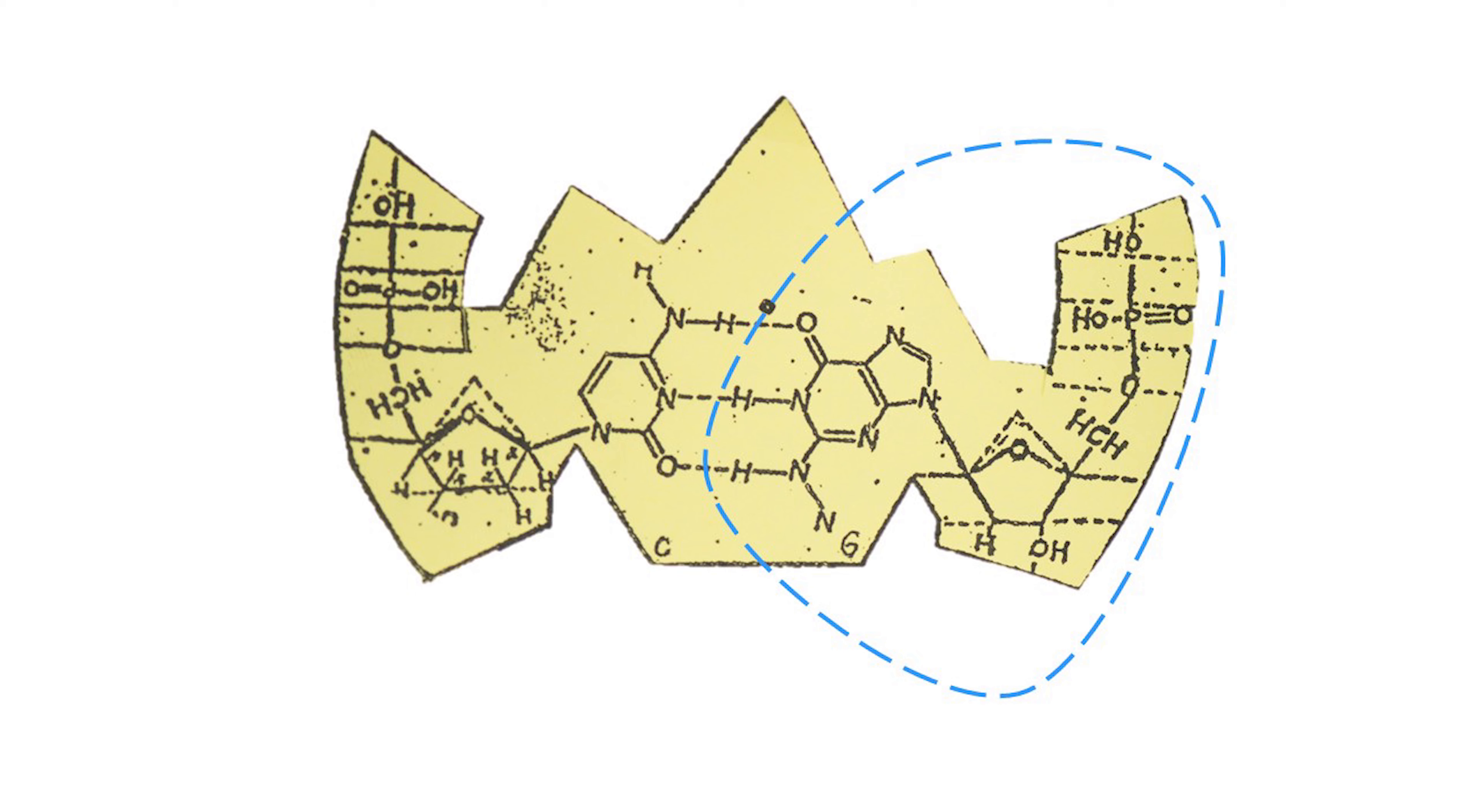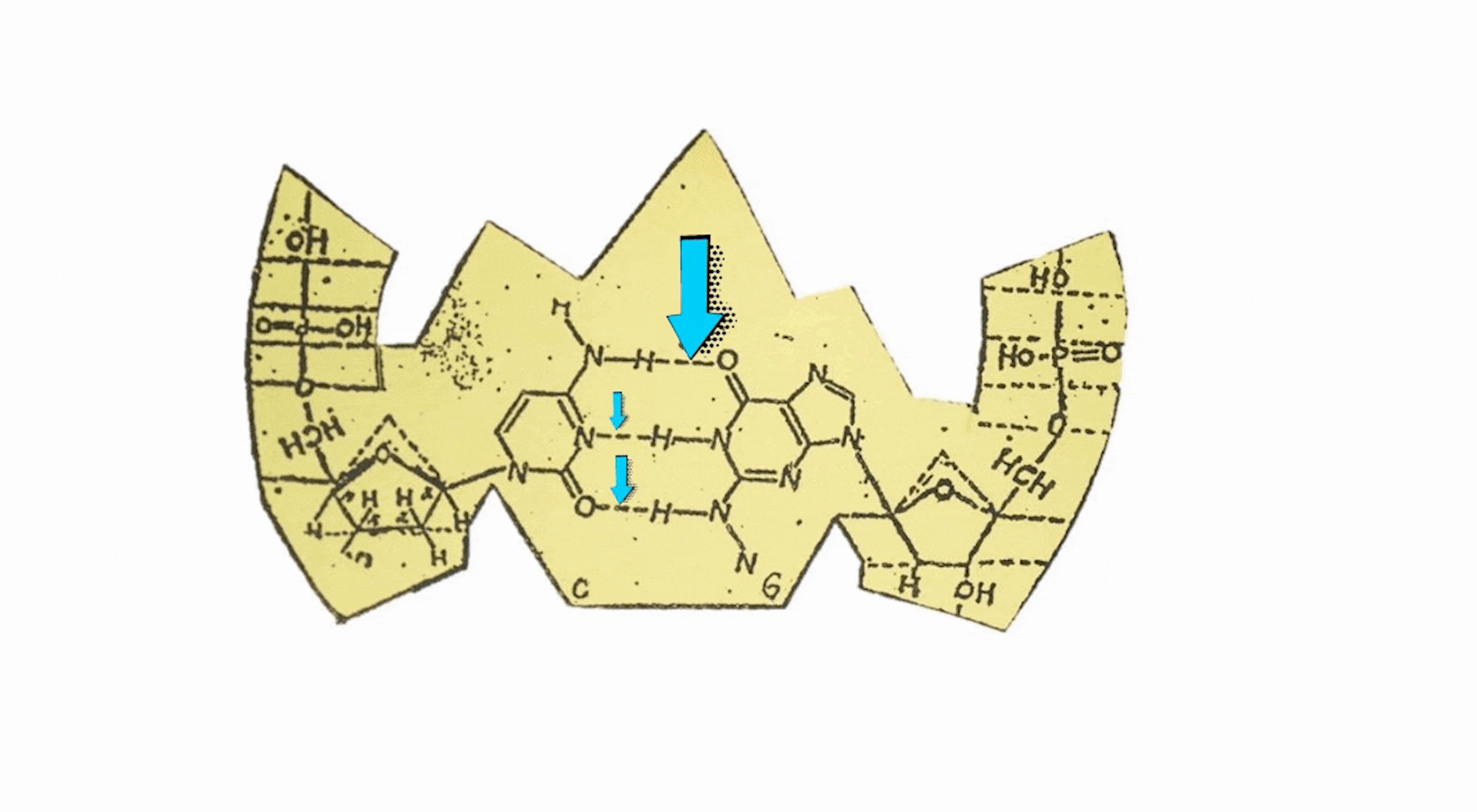They are held together with hydrogen bonds. Each nucleotide is composed of deoxyribose sugar, a phosphate group, and a nitrogenous base.